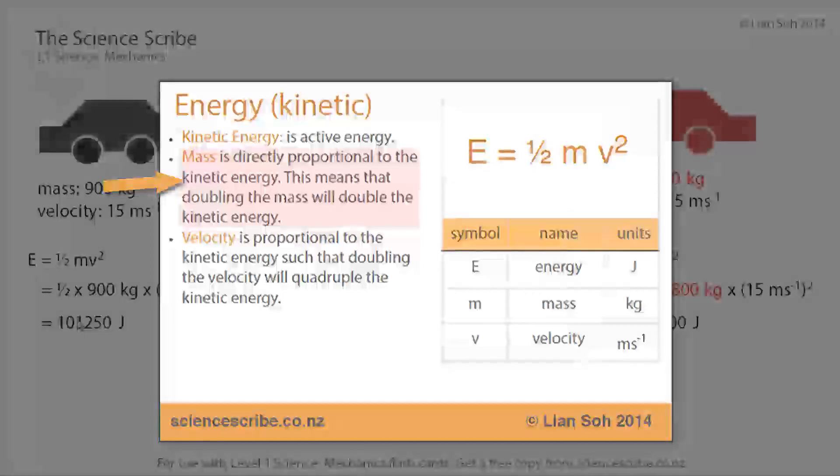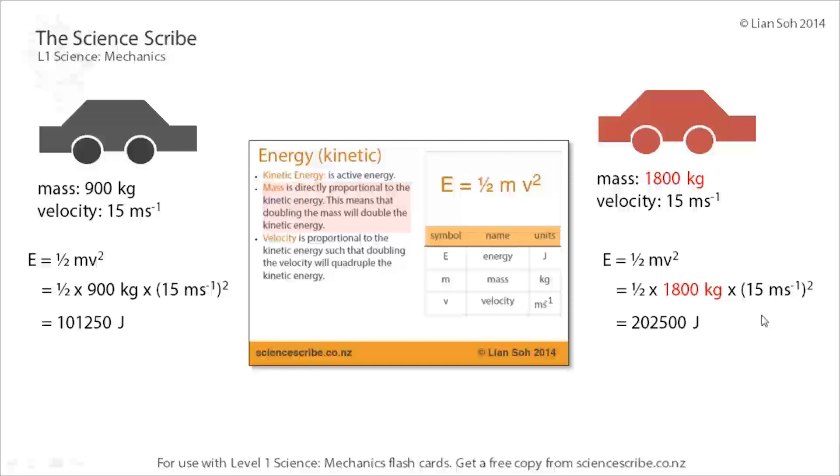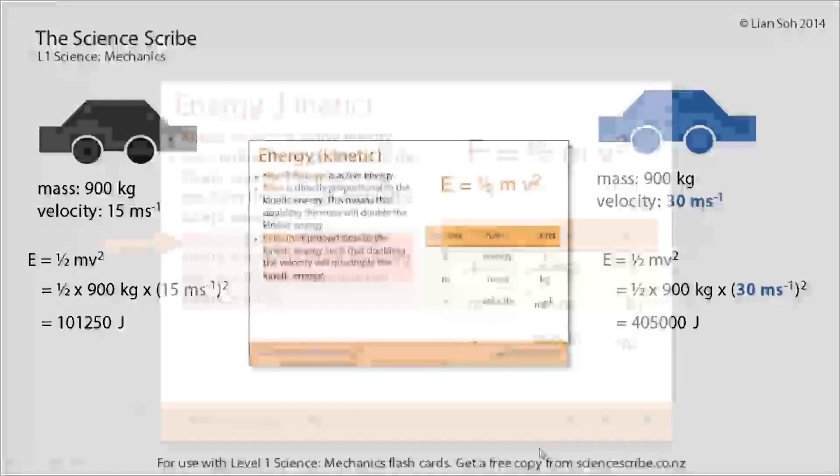Now in a different example, let's say instead of doubling the mass, we keep it the same at 900 kilograms in both cases. But this time I've got a velocity which has doubled - it's twice as big as before. If I then plug the numbers into the formula, I now see that my kinetic energy hasn't just doubled, it's actually quadrupled.